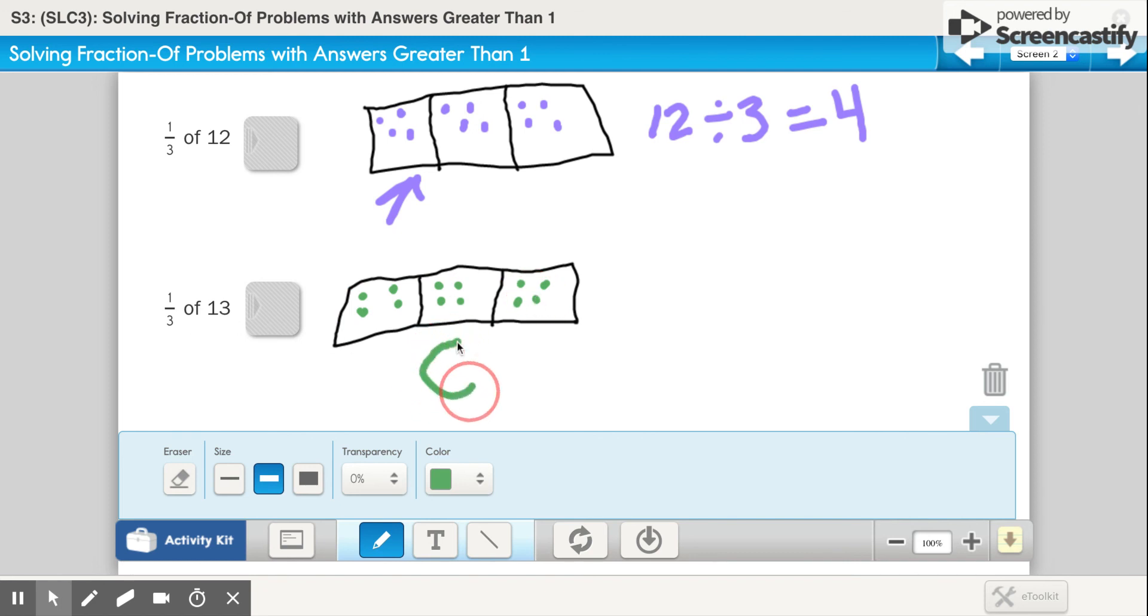So again, I have this leftover counter out here, because I can't just put them in one of these. I have to be fair, because we are sharing equally when we are talking about dividing. So, this time, it is being broken into thirds. So what do you think I should break this last counter into? If you said thirds, that was correct. So I need to break this last counter into thirds. So then a piece goes there, a piece goes there, and a piece goes there. So if I am looking at 1 third of 13, I have 4 and a third.